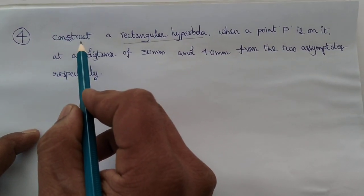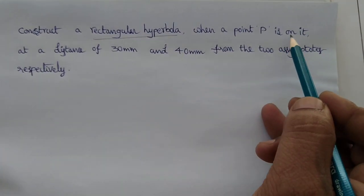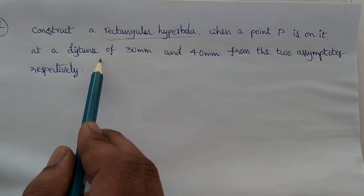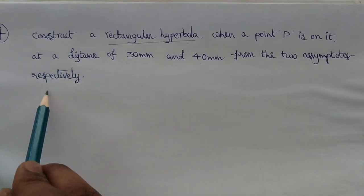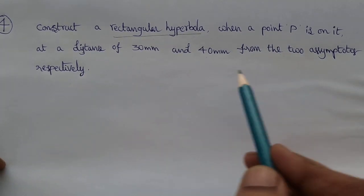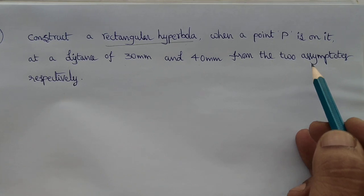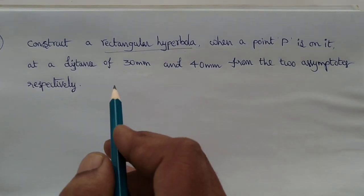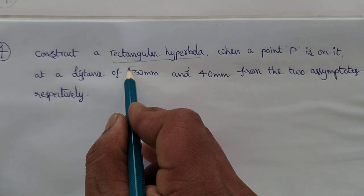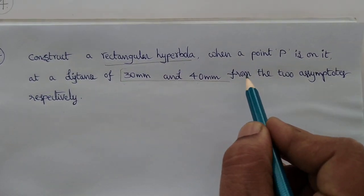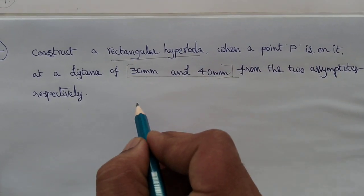So we can see the question: construct a rectangular hyperbola when a point P is on it at a distance of 30 mm and 40 mm from the two asymptotes respectively. That means here we are going to use two asymptotes. We should construct two asymptotes perpendicular to each other. Our condition is point P is located 30 mm and 40 mm from the two asymptotes.